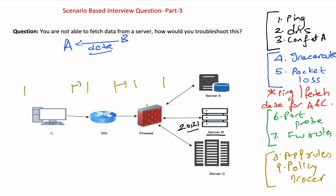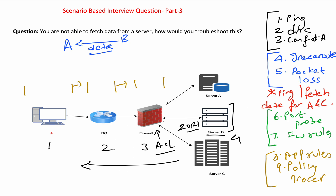If you still can't determine the issue, take packet captures hop by hop at all devices — client, gateway, firewall, and server — to see if the packet is also coming back. There could be an ACL issue where only unidirectional traffic is allowed and the return traffic is being blocked. MTU issues could also be causing packet drops at interfaces with specific MTU rules.